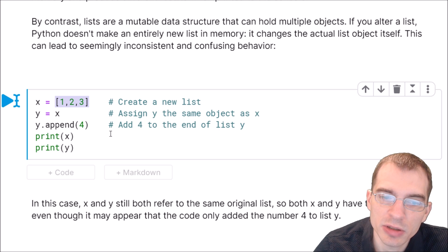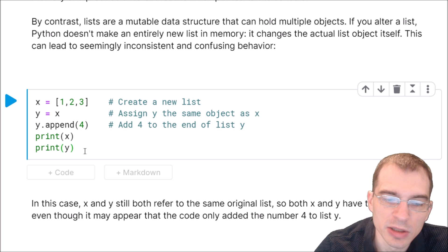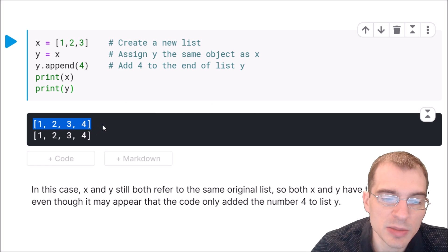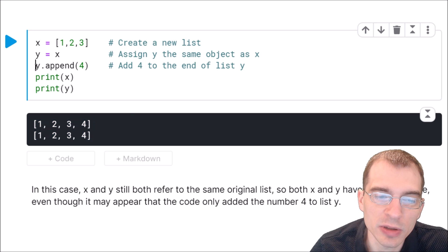And x is still pointing to that object as well. So after running this, and we print x and y, these are actually going to be the same thing still. This x list is going to have this number 4 added to it, even though we didn't also have to do x.append(4). You can see both the x list and the y list are pointing to the same object still. So even though we appended 4 to the variable y, it also effectively appended it to x as well, because they're both pointing to the same thing.